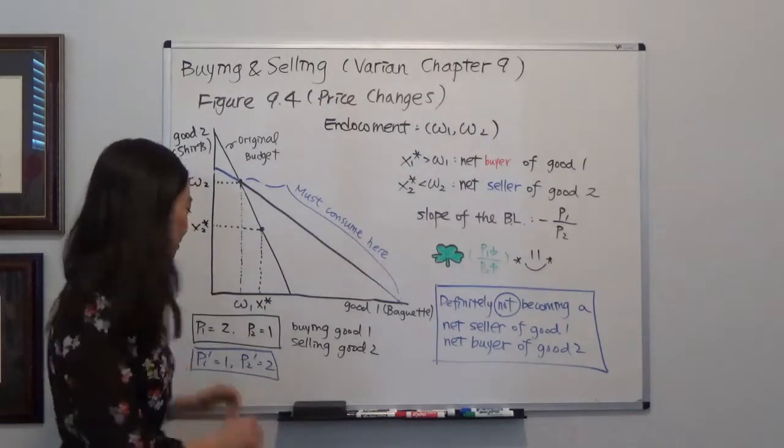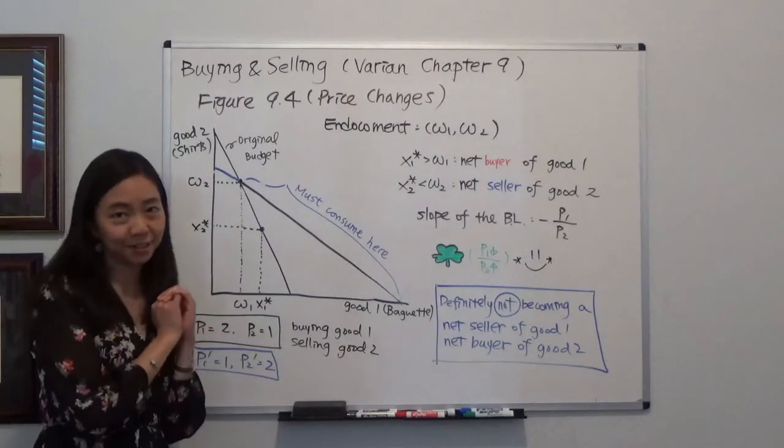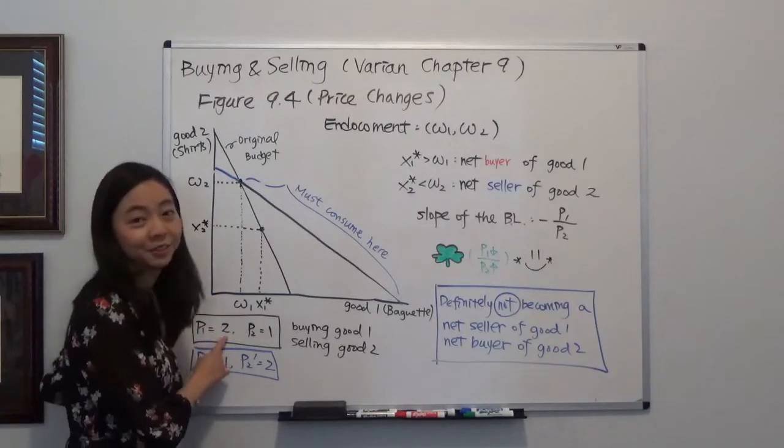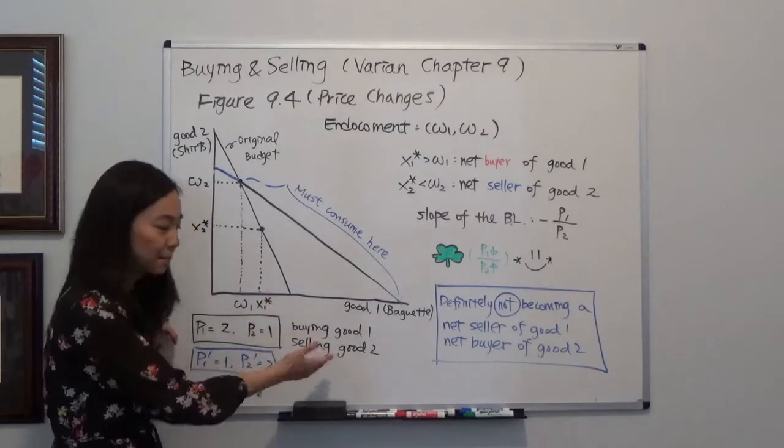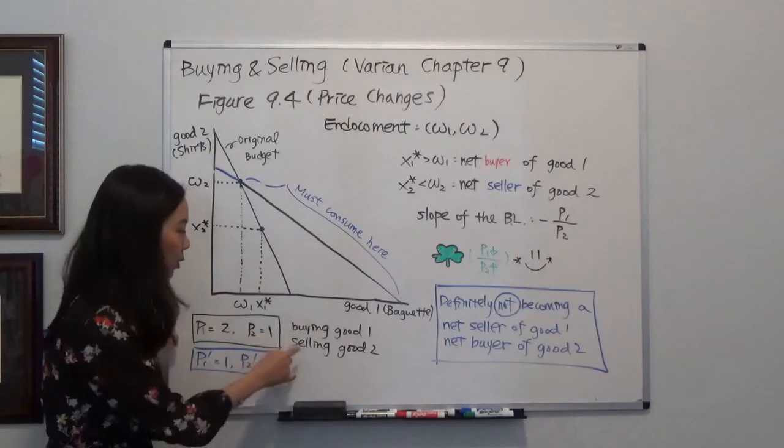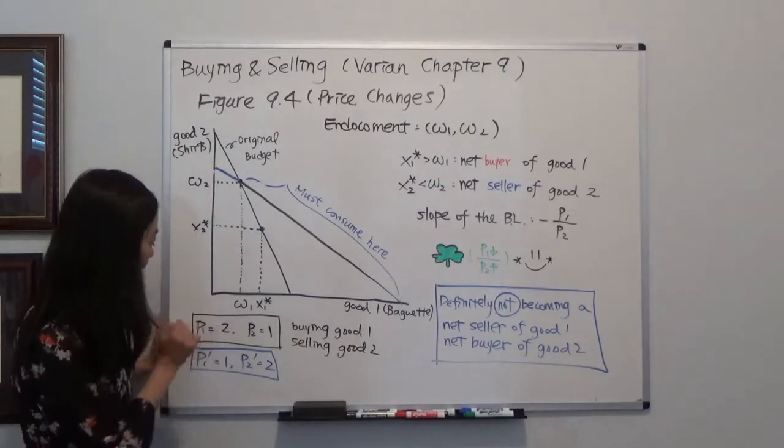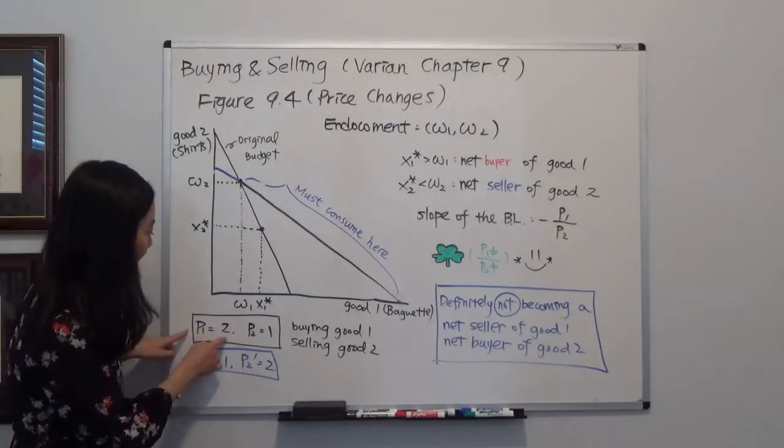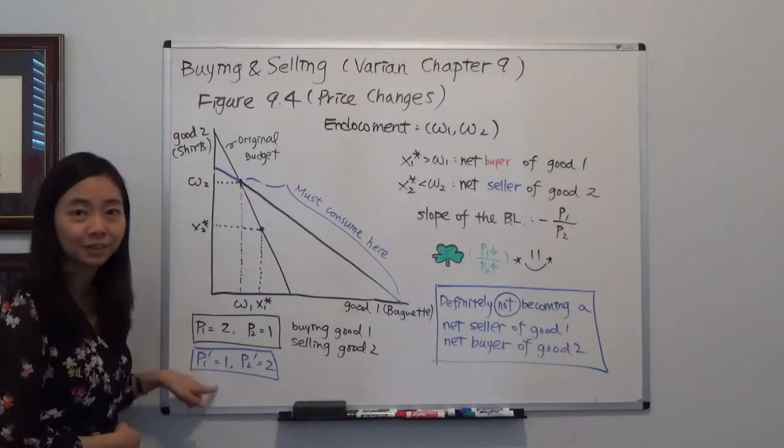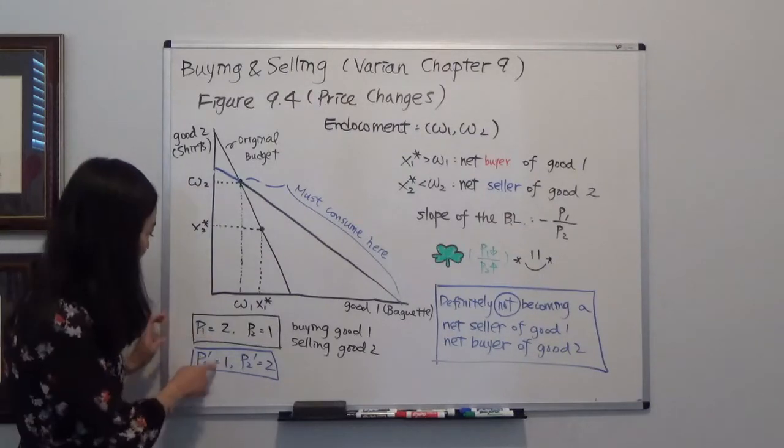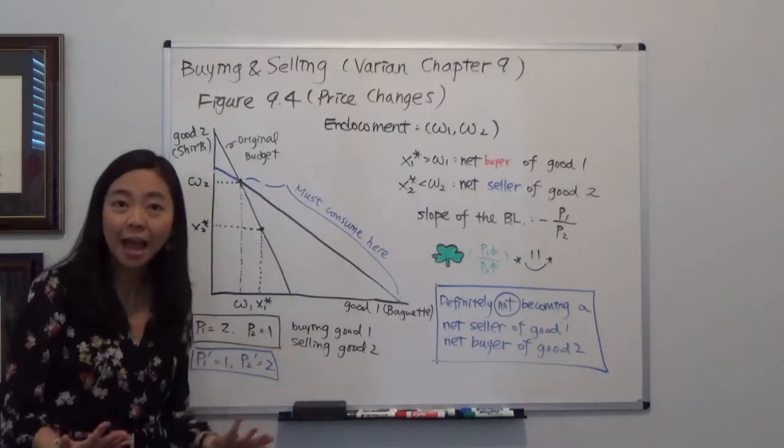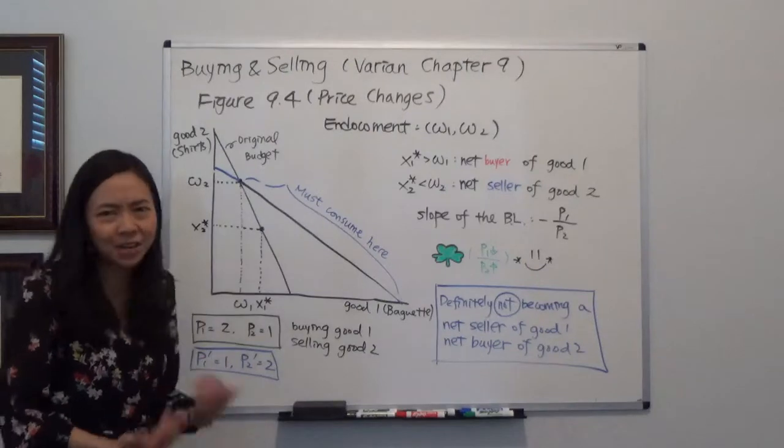Another way is this. So imagine that the initial price of a baguette was $2 and the initial price of t-shirt was $1. And at that time, you were buying baguettes and you were selling your t-shirt. So now, suppose the price has changed. The price of baguette has gone down from $2 to $1. And previously, you were a buyer of baguette. Now facing the lower price, of course you're very happy. You're definitely going to buy more baguette. You're not going to buy less.